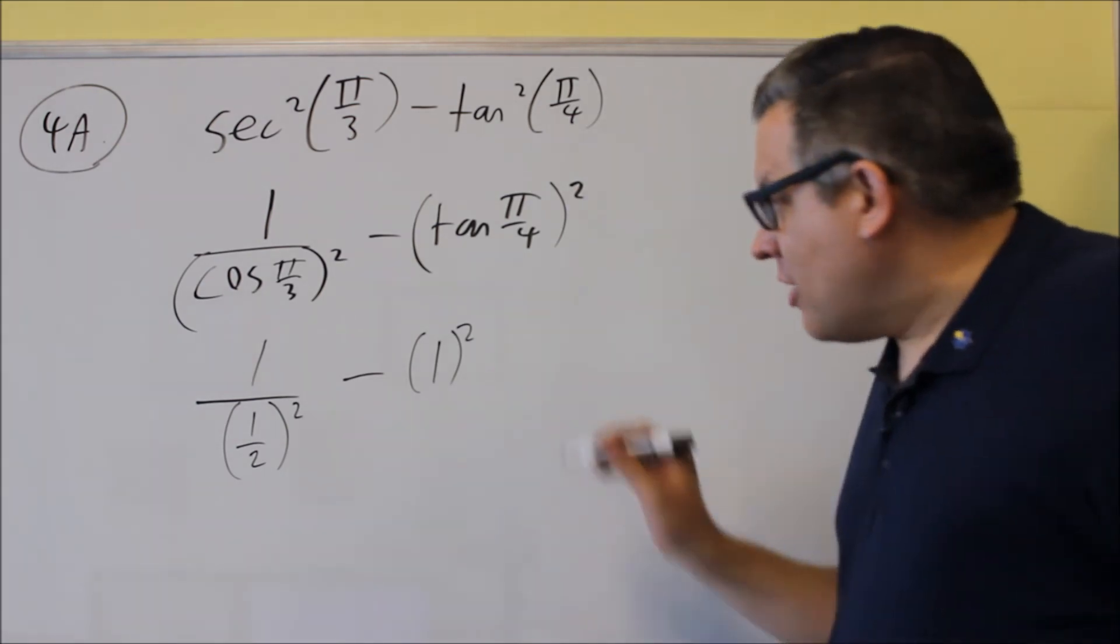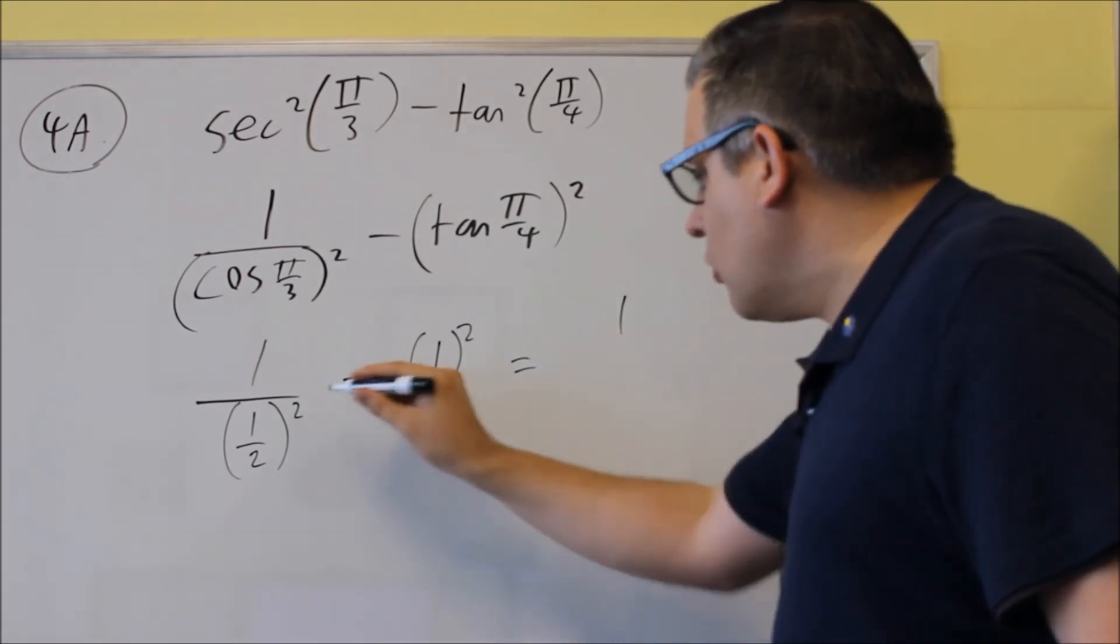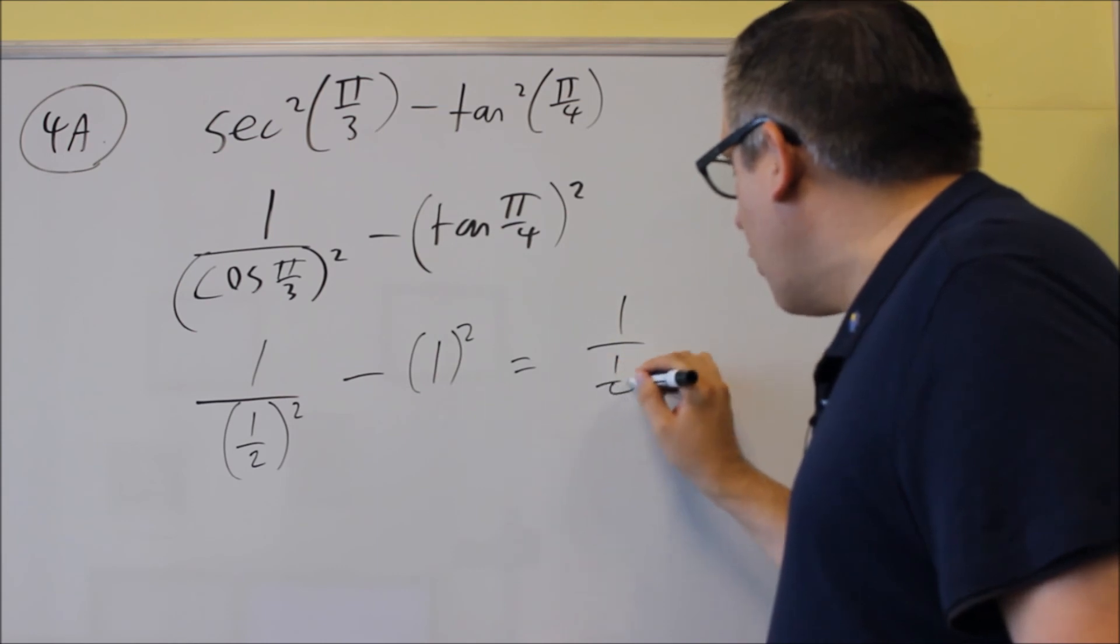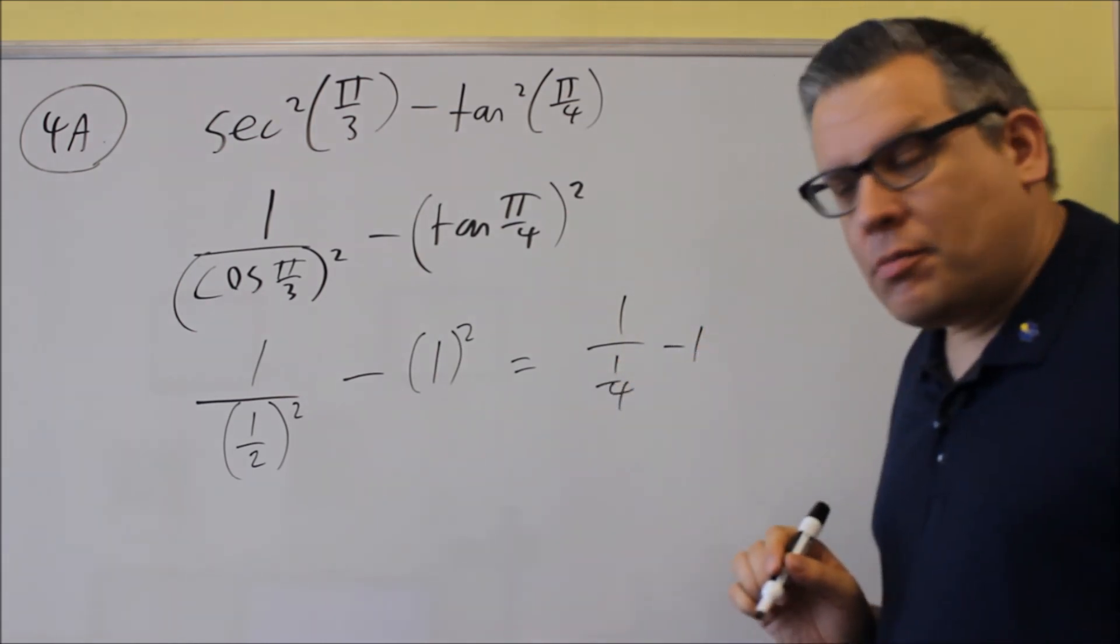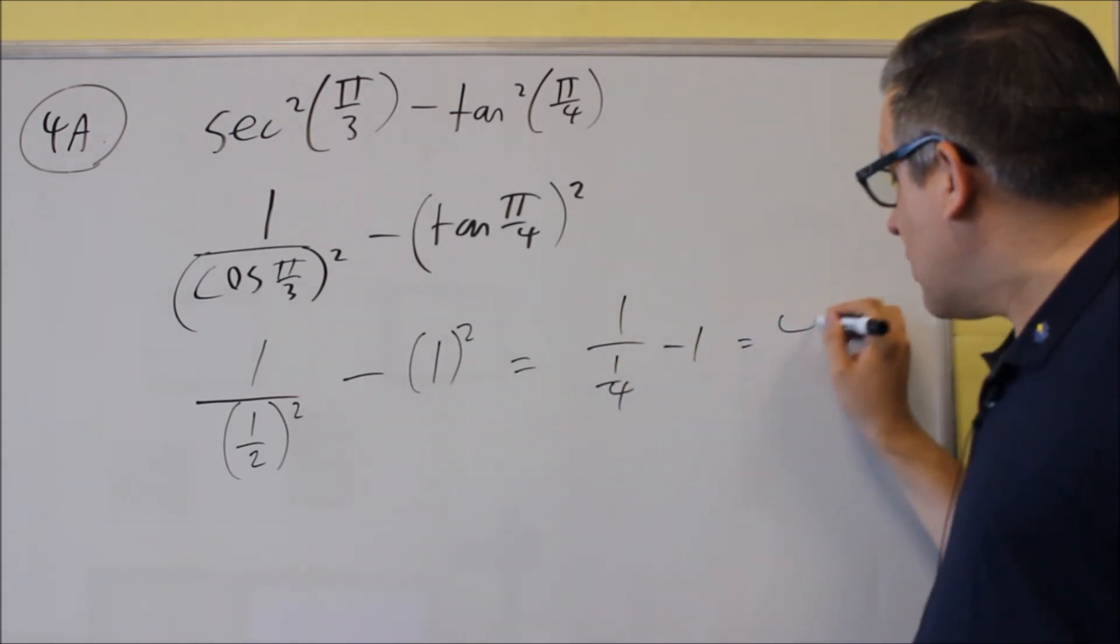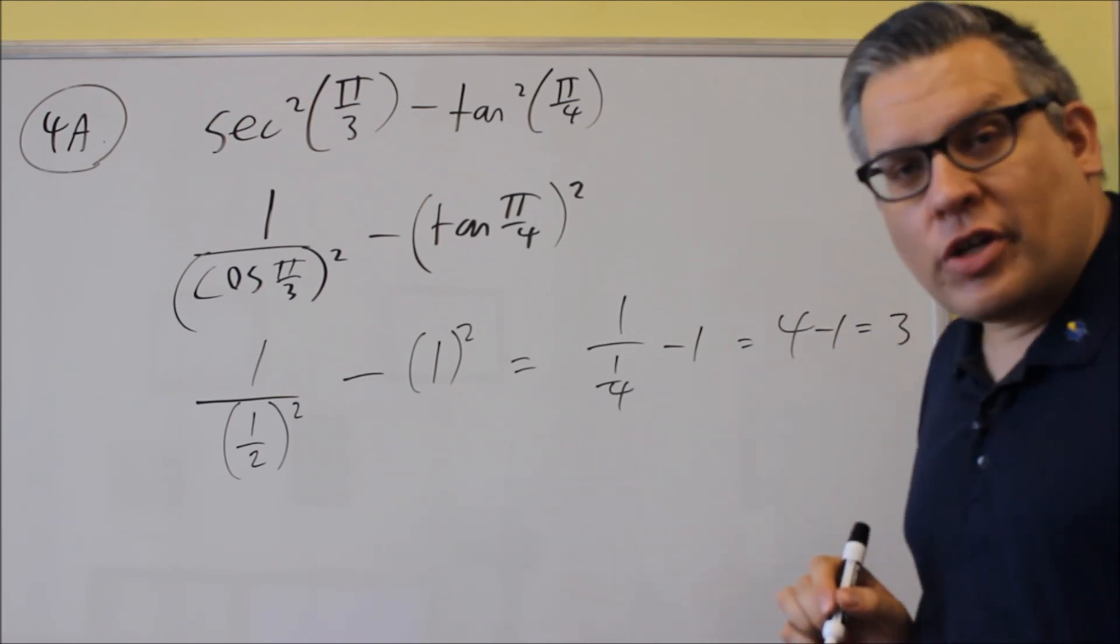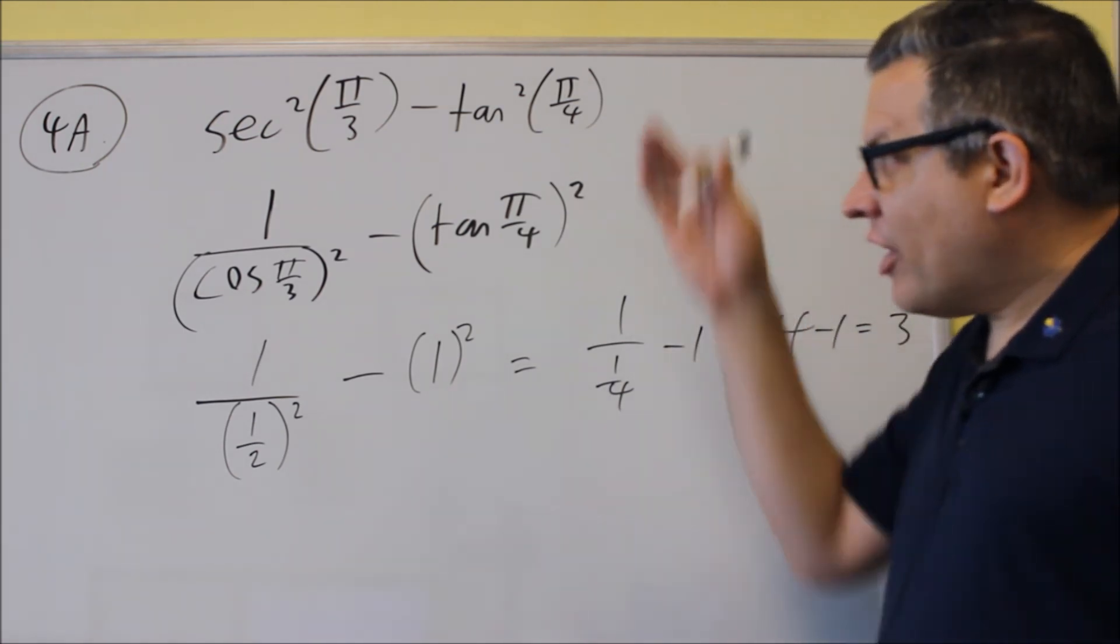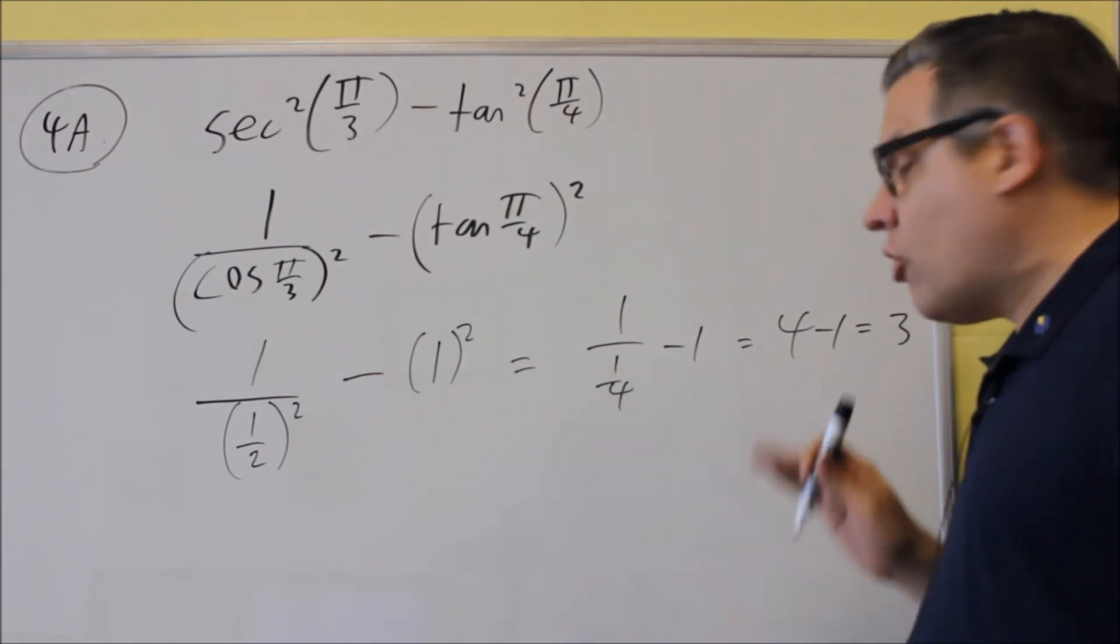Now we just need to simplify it. Over here we get 1 over 1 fourth minus 1. If we flip the fractions, same thing as 4 minus 1, which is 3. So that would be the exact value for this problem. It worked out to a whole number.